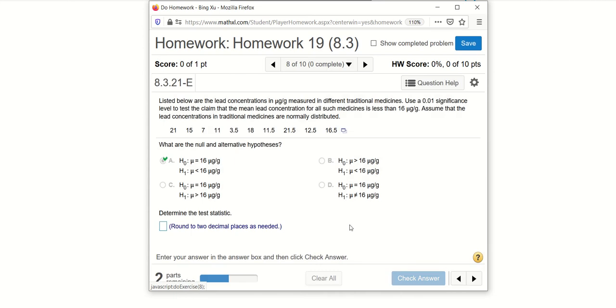Alright, so we can check the requirement real quick. They didn't say anything about the simple random sample, but we assume it is. And here it says the lead concentration in traditional medicines are normally distributed. So it satisfies the two requirements. We can go on.